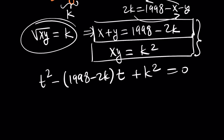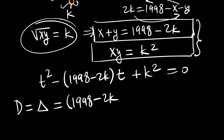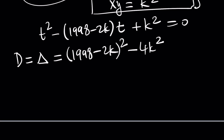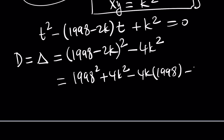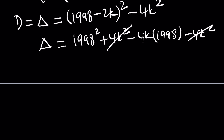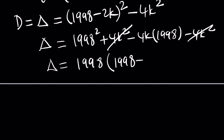Before we solve this equation, let's look at delta — the discriminant. It's b² minus 4ac, which is (1998 minus 2k)² minus 4k². When you simplify, 4k² cancels out and you end up with something that factors as 1998 times (1998 minus 4k).